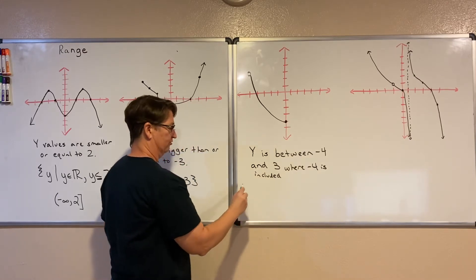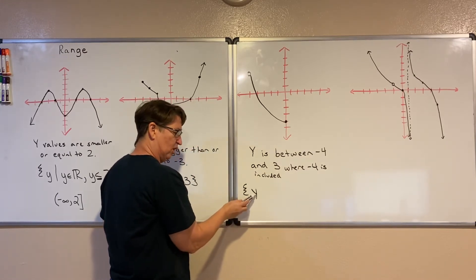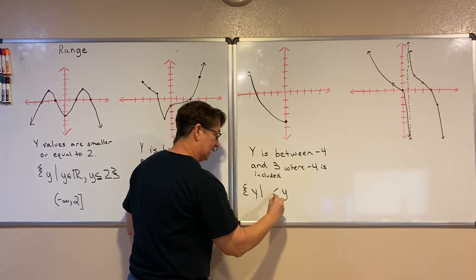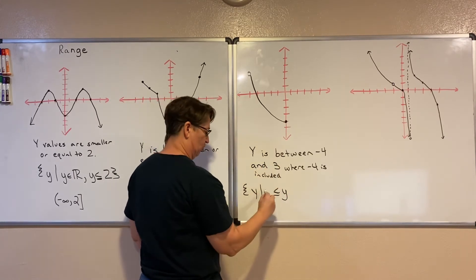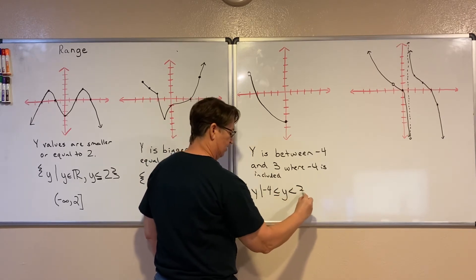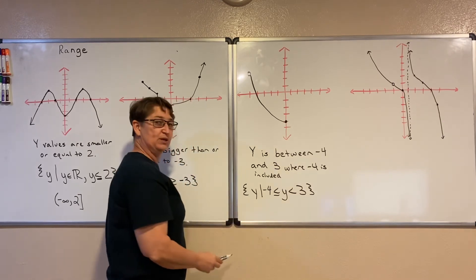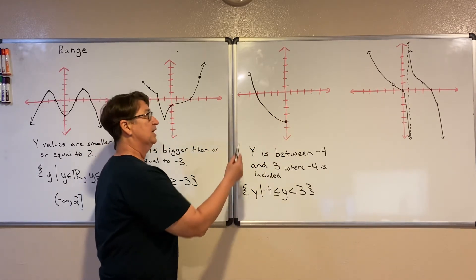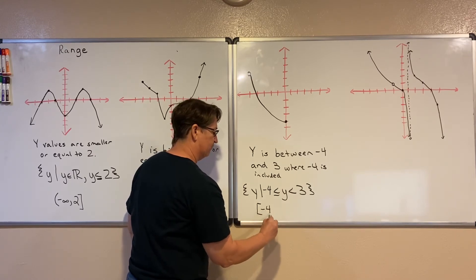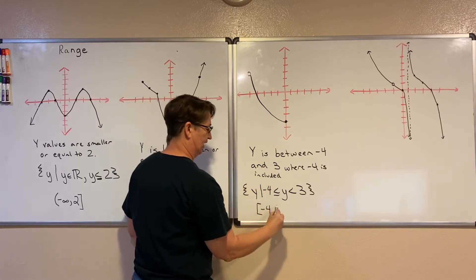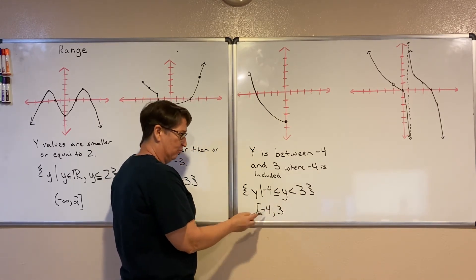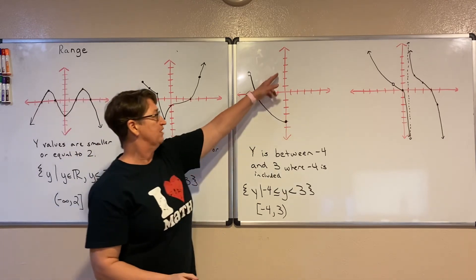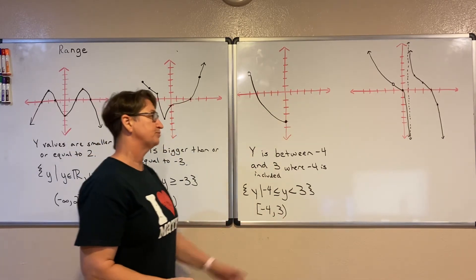So y is between negative four and three, but we must include negative four. In set builder notation: y such that negative four ≤ y < three. The ≤ symbol lets us know it can equal negative four because there is an output there. In interval notation the smallest number is negative four — included, so we use a bracket — and the largest is three — not included, so we use a parenthesis.